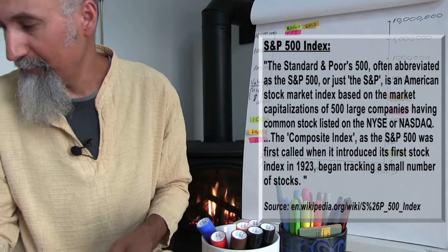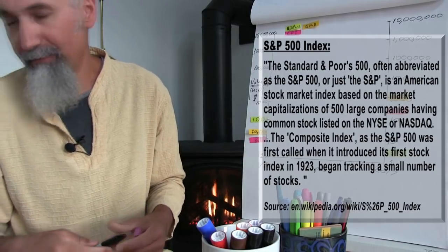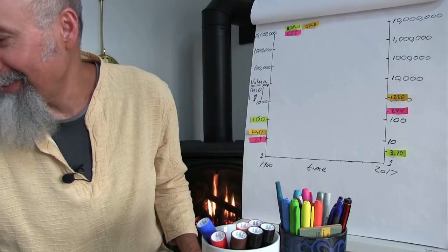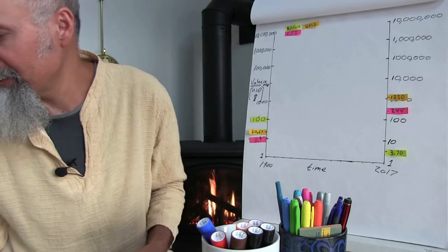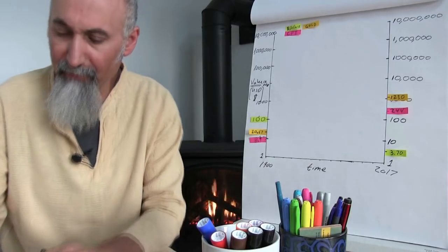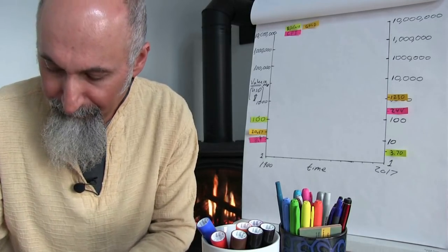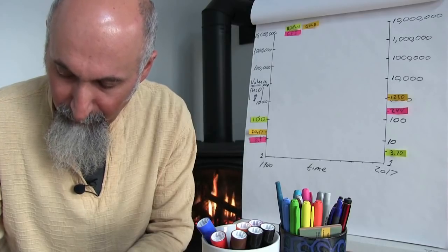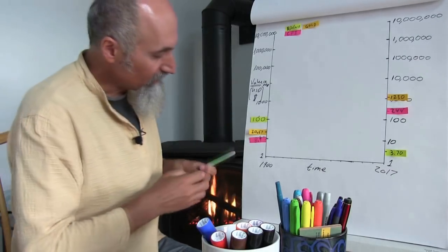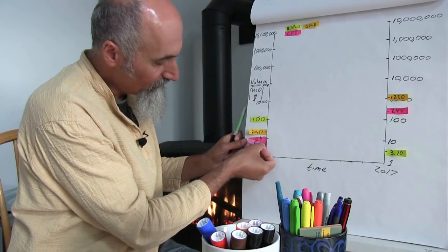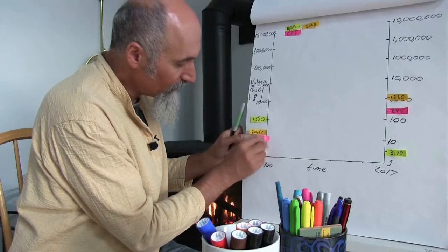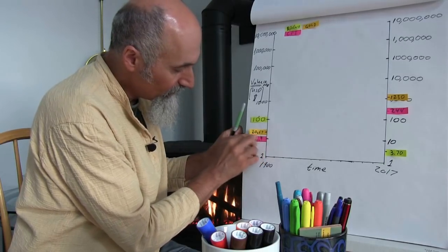The S&P in 1900 — it wasn't called the S&P, it was called the Composite Index. I found only one source which gave me the 1900 number; there are multiple sources for the 1920 number and beyond. The S&P 500 equivalent in 1900 was 6.1. So 6.1 is somewhere around here on the graph.